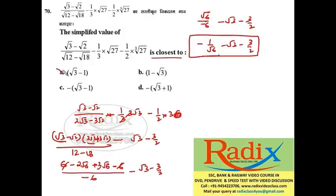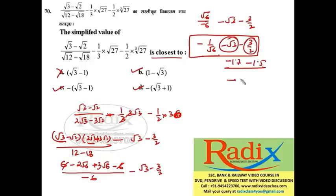The final simplified value gives 1/(−√6 + something) with all values negative. Checking approximate values: −√3 ≈ −1.7, −1.5, giving a result around −2 point something, confirming the answer is negative. We need to calculate the closest value among the given options.